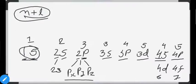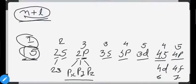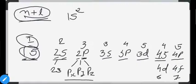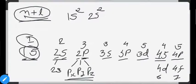Electrons are arranged in orbitals in order of increasing n+l value. The lowest n+l value is for 1s, and each orbital can hold 2 electrons, so the first 2 electrons enter 1s. Then 2s gets 2 electrons. For Fe we have 26 electrons total. Next come 6 electrons filling the 2p orbital, then 2 in 3s.